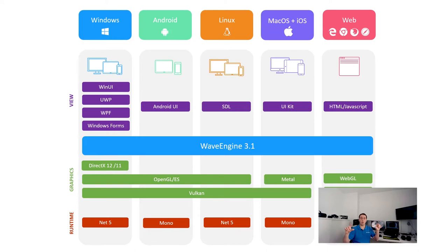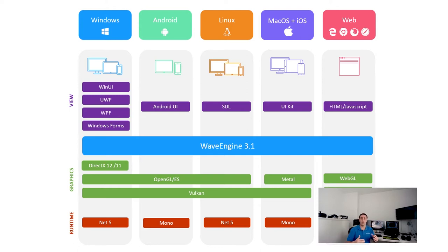In Wave Engine 3.1, we have a low-level abstraction graphics API, which allows us to run the same application across different operating systems using different 3D low-level graphics APIs. The supported platforms shown at the top of the diagram are Windows, Linux, macOS, iOS, Android, and Web.